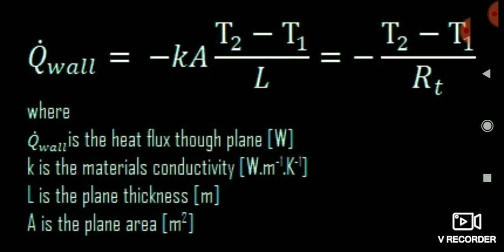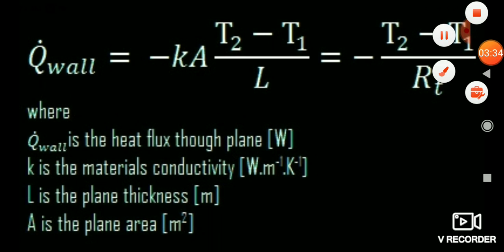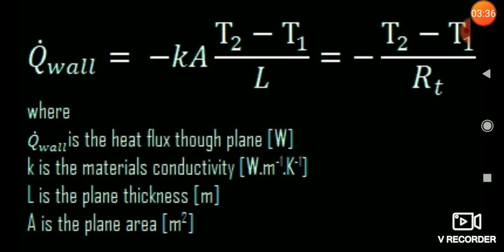You should take care about the units. Q is the amount of heat transfer per unit time — its unit is watts (joules per second). The thermal conductivity k has units of watts per meter per kelvin, length L is in meters, and area A is in meters squared.